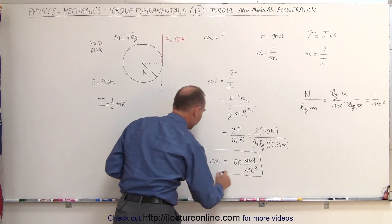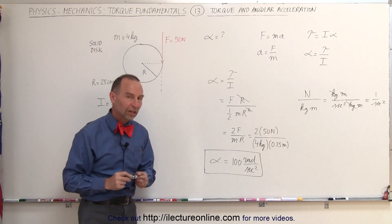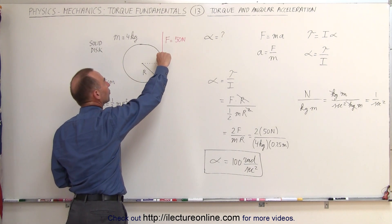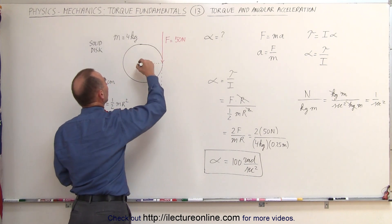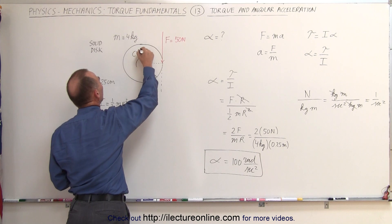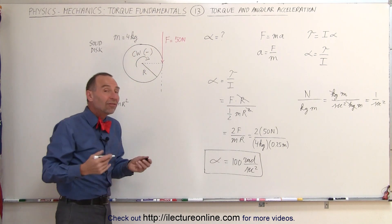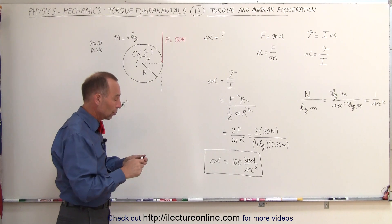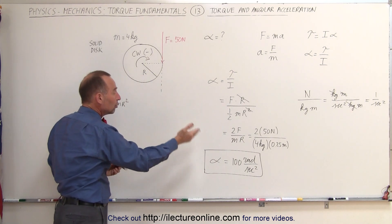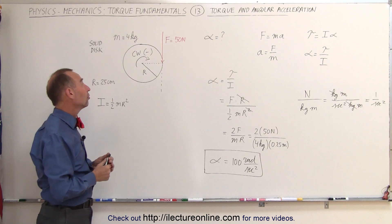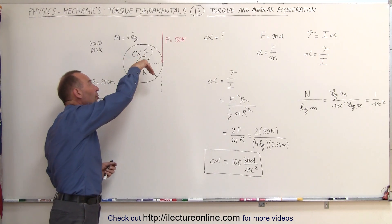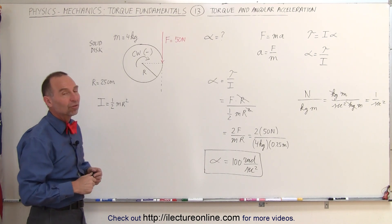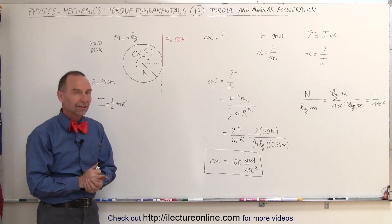So the magnitude of the angular acceleration is 100 radians per second squared. I did say magnitude, because what about the direction? Notice that the force will cause the disc to spin in a clockwise direction, which means we're going to end up with a clockwise torque, which is a negative torque. So in essence, we can say that we're going to get a negative acceleration of 100 radians per second squared. A negative torque would cause a torque into the board, so we get an into-the-board direction for the torque, giving us negative 100 radians per second squared if we take into account the sign as well.